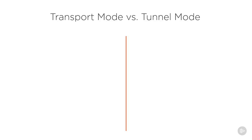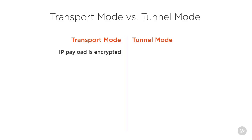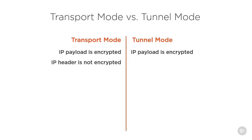As previously mentioned, IPsec has two modes: transport and tunnel. The IP payload is encrypted in transport mode as well as tunnel mode. However, in transport mode the IP header is not encrypted, while in tunnel mode the IP header is encrypted.